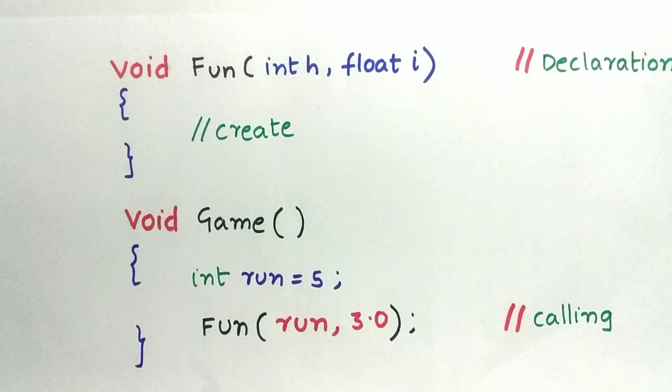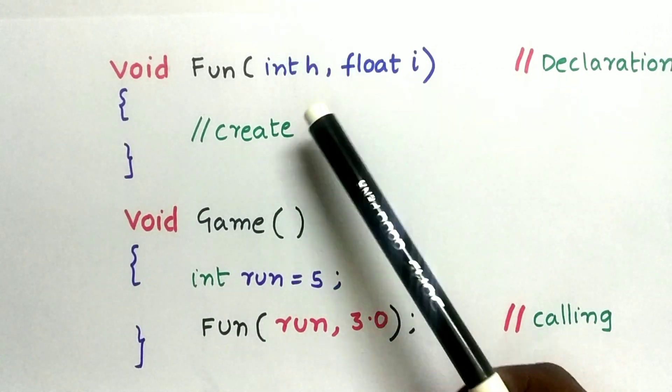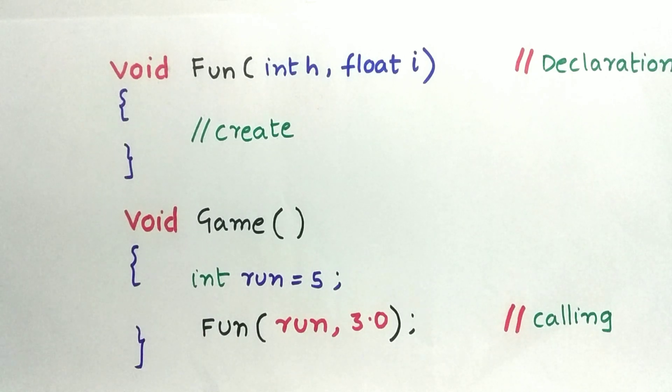So I hope this makes it clear that h and i are parameters, run and 3.0 are arguments.